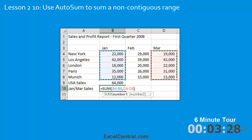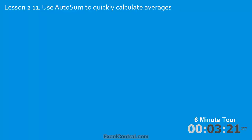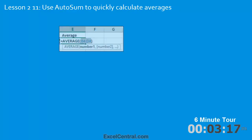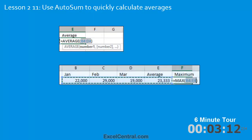In this example a formula has been automatically generated to calculate the sales for January and March for all branches. In the eleventh lesson you'll use AutoSum to calculate averages, because AutoSum isn't only for sums. You'll also use AutoSum to calculate a maximum value.